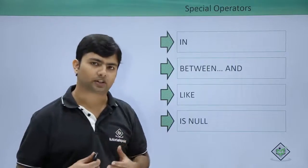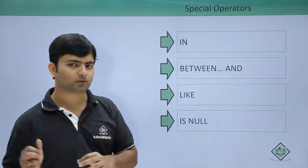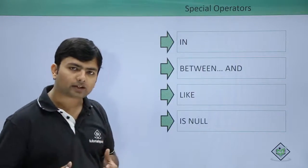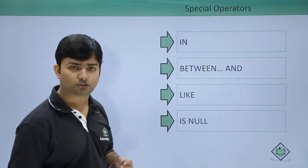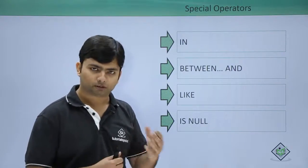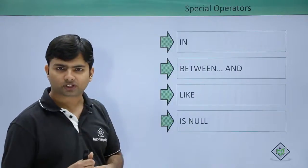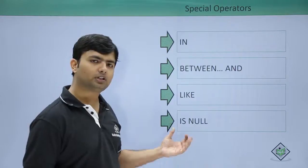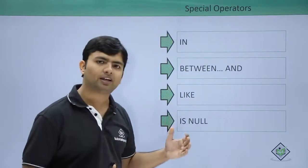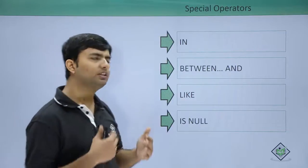The LIKE operator is used to check patterns — for example, getting all employees whose names start with A. We use wildcard characters: the percentage symbol (%) matches zero or multiple characters, while the underscore (_) matches exactly one single character. ISNULL is used to compare null values, since null is not a defined value and cannot be compared with operators like IN or equals to. Let's have a look at all these operators practically.